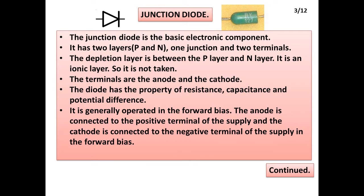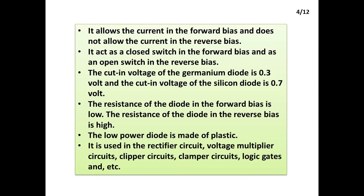The terminals are the anode and the cathode. The diode has the properties of resistance, capacitance, and potential difference. It is generally operated in the forward bias, where the anode is connected to the positive terminal and the cathode to the negative terminal of the supply. It allows current in forward bias and blocks current in reverse bias, acting as a closed switch in forward bias and an open switch in reverse bias.